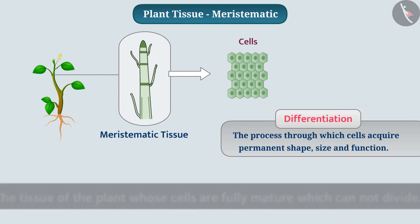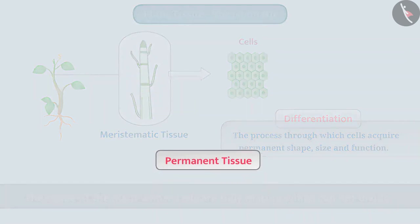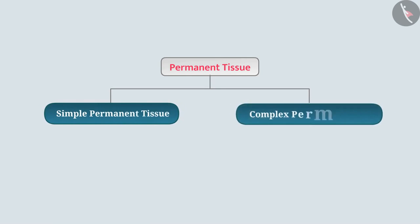The tissue of the plant whose cells are fully mature and which cannot divide is called permanent tissue. Permanent tissue is of two types: simple permanent tissue and complex permanent tissue. Let us know about the plant's simple permanent tissue in detail.